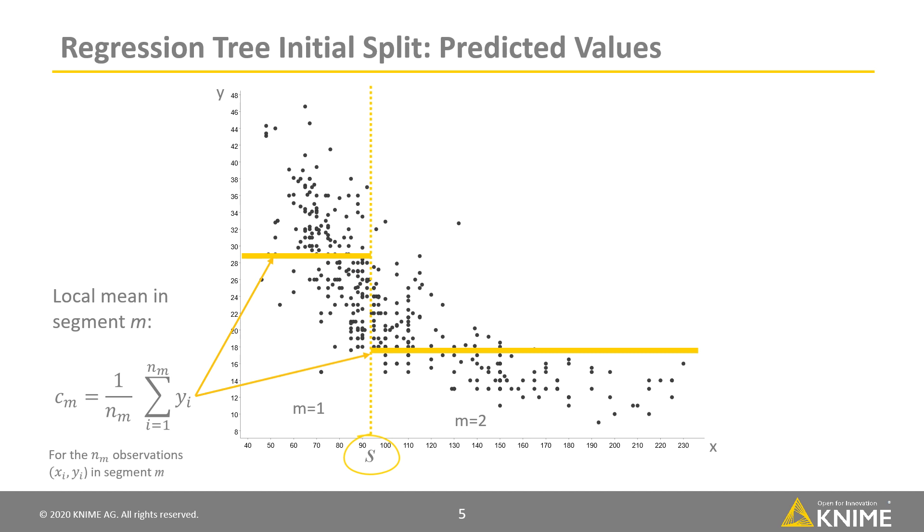Within each segment m, the outcome variable y is modeled by the local mean value of y. In this scenario, what would be the best boundary s that splits the input feature x into two segments?